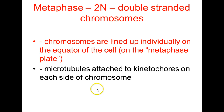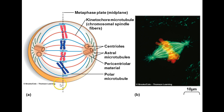Metaphase: still diploid with double-stranded chromosomes. During metaphase, chromosomes are lined up individually on the equator of the cell — referred to as the metaphase plate. Microtubules are attached to the kinetochores on either side of the chromosome. The diagram shows the metaphase plate as a ring around the center of the cell, with microtubule organizing centers at either end bearing centrioles, asters, and pericentriolar material. We won't distinguish between kinetochore microtubules and polar microtubules — we'll just refer to them as spindle fibers.